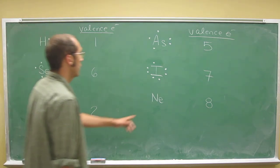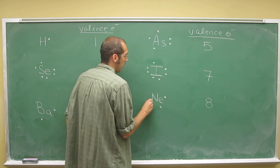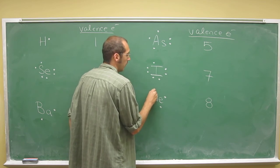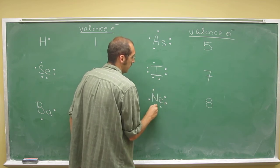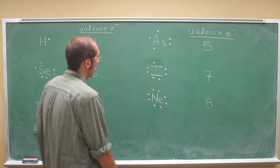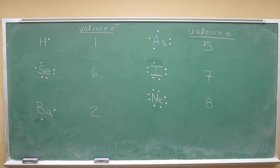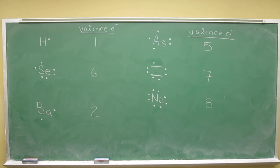And neon's got its full octet, so one, two, three, four, five, six, seven, eight. Okay. So hopefully, that's a pretty good survey of the different groups on the periodic table. Hopefully, you could do any of these elements now after this video.